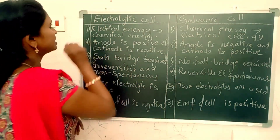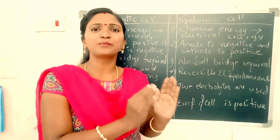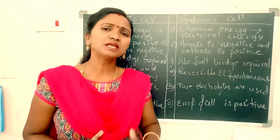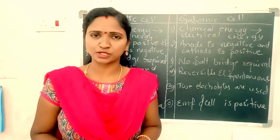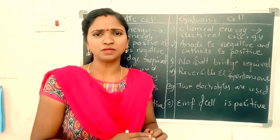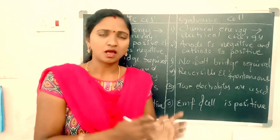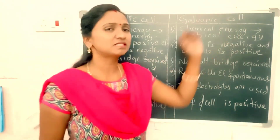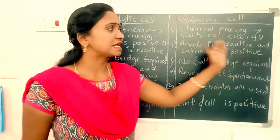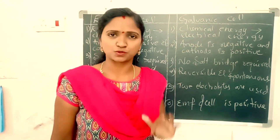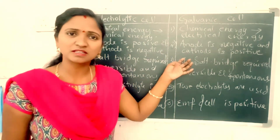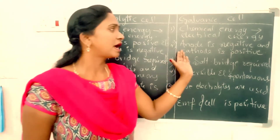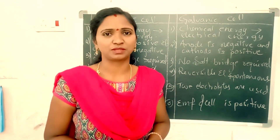The second difference: in the case of electrolytic cell, anode is a positive electrode and cathode is a negative electrode. Whereas in galvanic cell, anode is a negative electrode and cathode is a positive electrode.